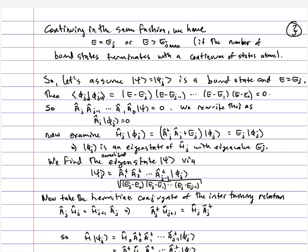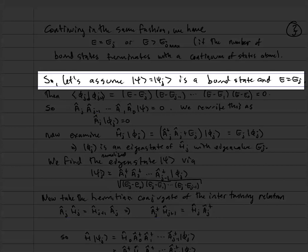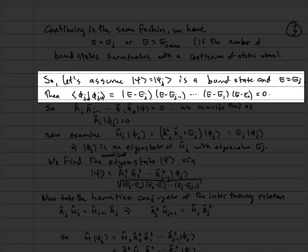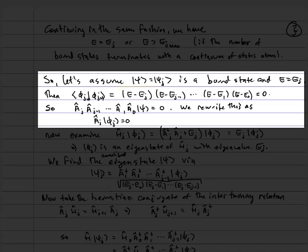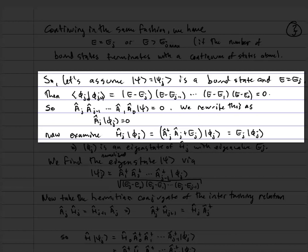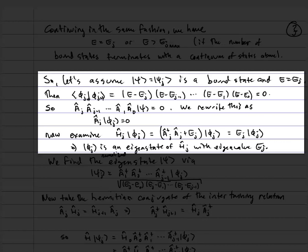Assuming ψ = ψⱼ is a bound state with energy e = eⱼ, we find that ⟨φⱼ₊₁|φⱼ₊₁⟩ = 0, meaning aⱼ aⱼ₋₁ ⋯ a₀|ψ⟩ = 0. We can rewrite that as aⱼ|φⱼ⟩ = 0. When hⱼ acts on |φⱼ⟩: hⱼ = aⱼ†aⱼ + eⱼ, and since aⱼ|φⱼ⟩ = 0, we get hⱼ|φⱼ⟩ = eⱼ|φⱼ⟩. The state |φⱼ⟩ is indeed an eigenstate of the jth auxiliary Hamiltonian with eigenvalue eⱼ.